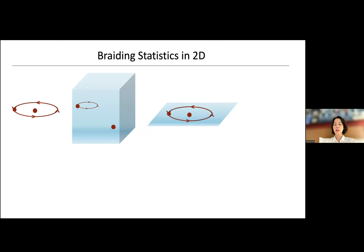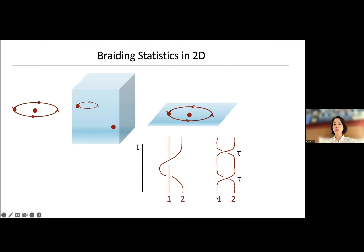Anyone is about the change of the state of the system being something very different from fermion and boson. When we think about braiding statistics, we can either follow the motion of a particle in a movie or look at the trajectory in spacetime — the worldline. A full circle, one particle going completely around the other, is equivalent topologically to two exchange processes. So exchange is like half of a braid.